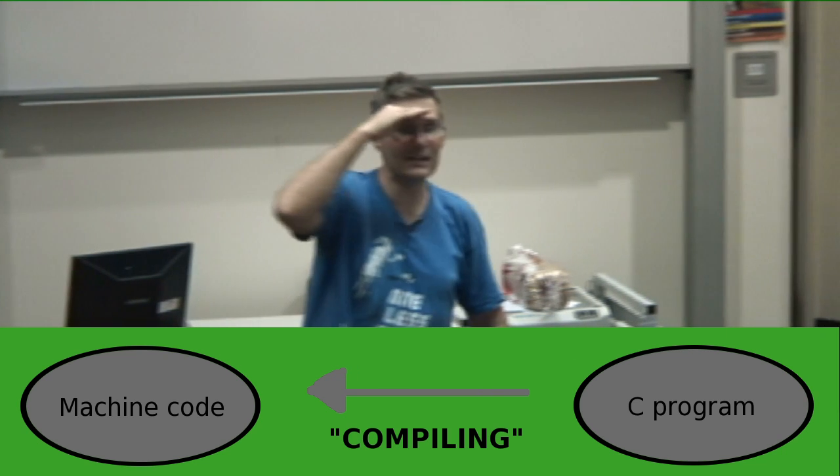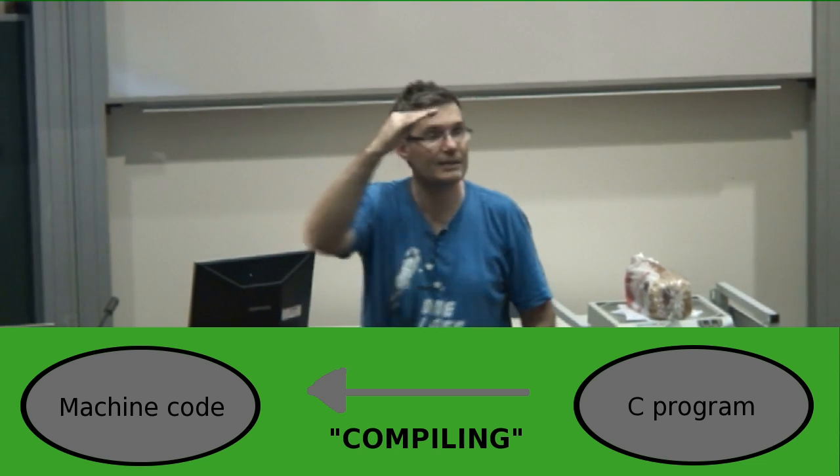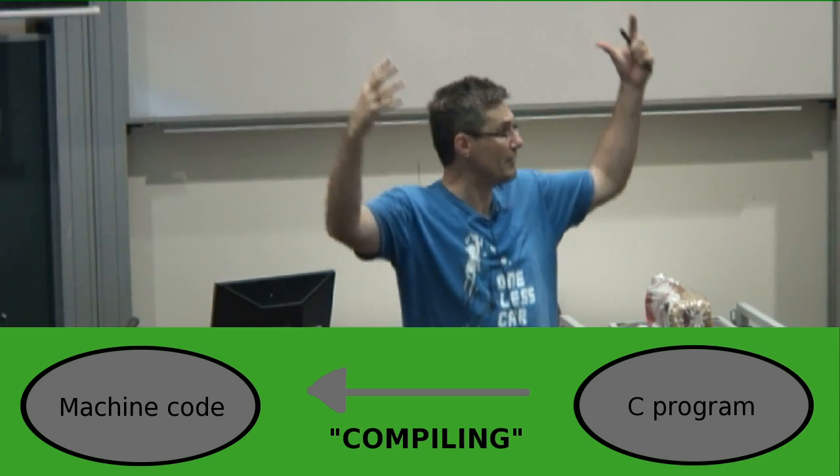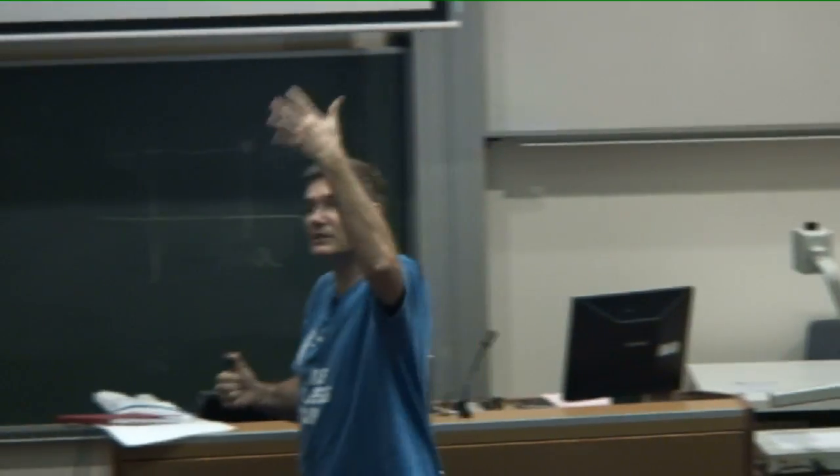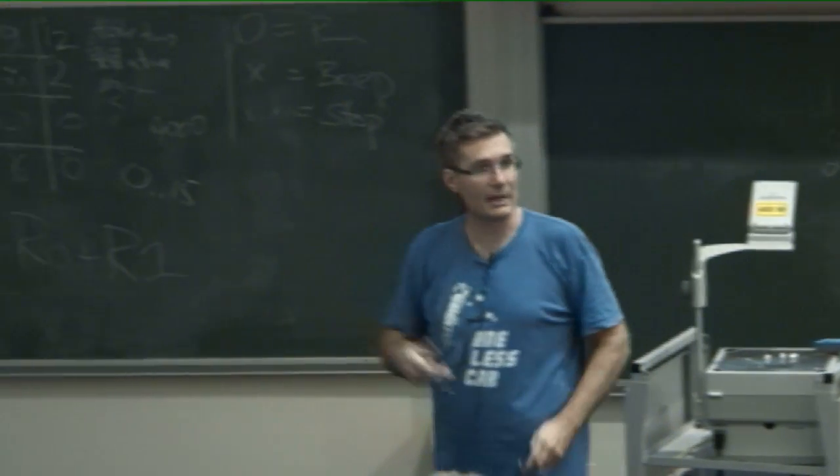When your program's running, you can think it's executing machine code, because it is. But you can also think it's executing C, because at a higher level of abstraction, it is. Both of those things are equally true. And it's interesting to be able to have two different views on it. Whichever one's most useful depends on the exact problem you're facing.